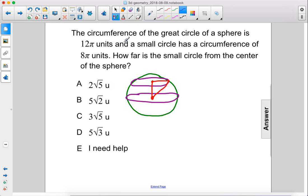Alright, so let's take the information we have. The circumference of the great circle equals 2π capital R. This is capital R here. This is lowercase r there. So that equals 12π. Therefore, capital R equals 6.